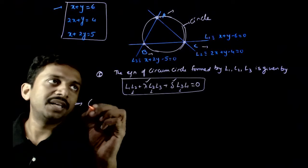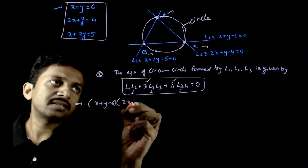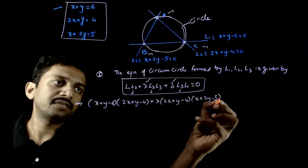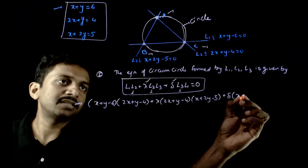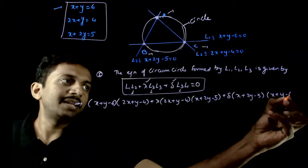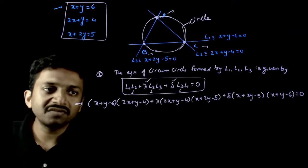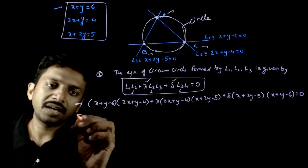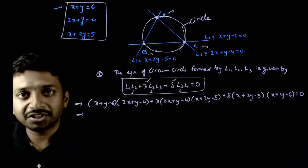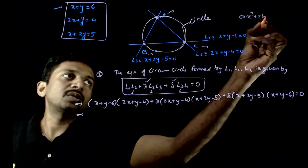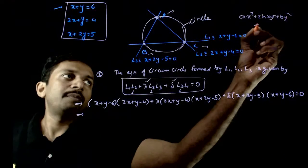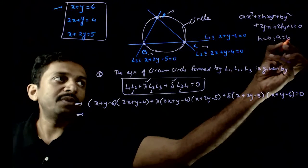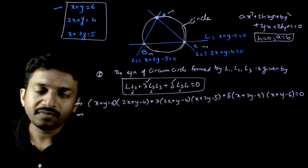So this implies: L1·L2 = (x + y − 6)(2x + y − 4) plus lambda times (2x + y − 4)(x + 2y − 5) plus delta times L3·L1 = (x + 2y − 5)(x + y − 6) = 0. This is a general equation passing through the three points A, B, C and it is a quadratic expression. Now if this has to be a circle — for ax² + 2hxy + by² + 2gx + 2fy + c = 0 — the conditions are: h = 0 and a = b.